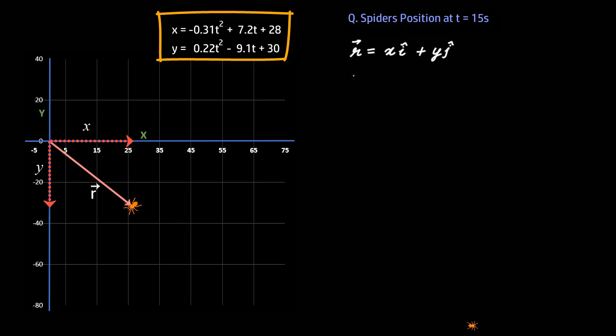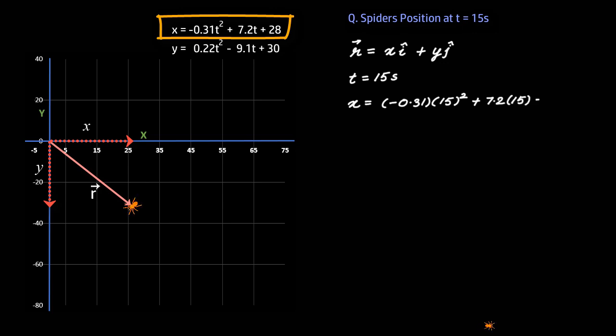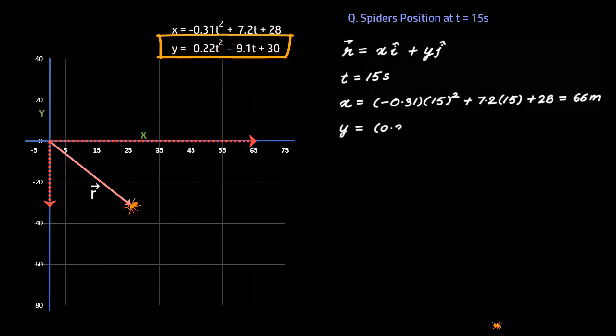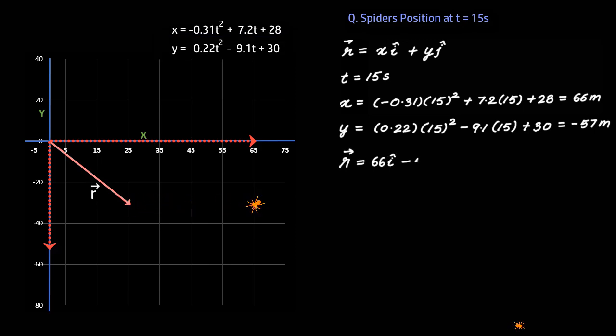At t = 15 seconds, x = -0.31(15)² + 7.2(15) + 28, which equals 66 meters. And y = -57 meters. So we can say that the spider's position vector at t = 15 seconds is r = 66i - 57j. On the x-y axis, the position vector would look like this.